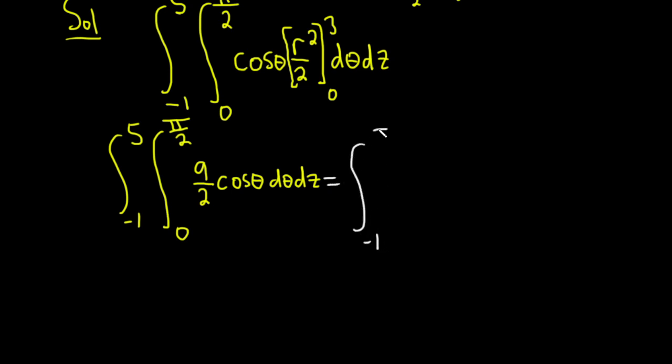Integrating cosine is going to give us sine, so this is 9 halves. I'll put a bracket here on the sine. And we're going from 0 to pi over 2. And then we still have the dz.